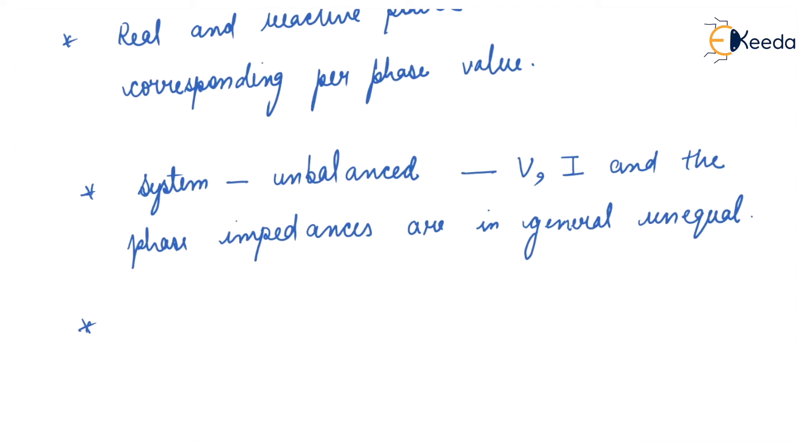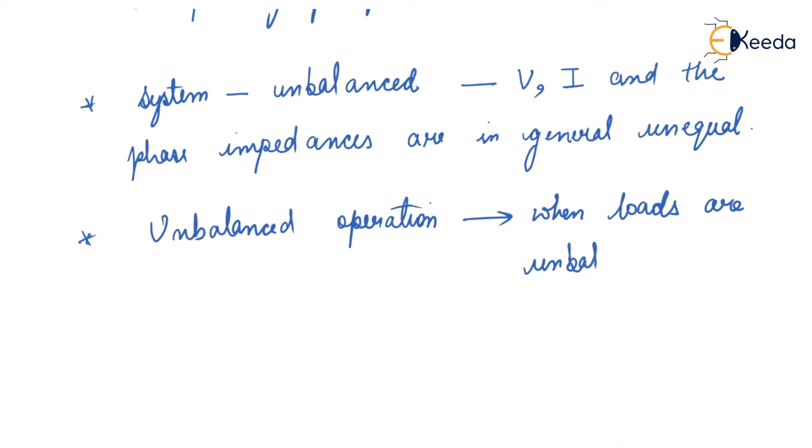These unbalanced operations can result when loads are unbalanced. This means all three phase loads may be different, and this is more applicable to your distribution system.